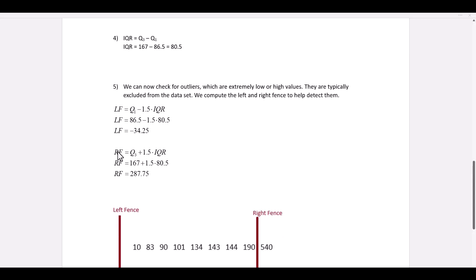The right fence is quartile 3 plus 1.5 times IQR. We plug in our information, calculate the right fence, it's 287.75.